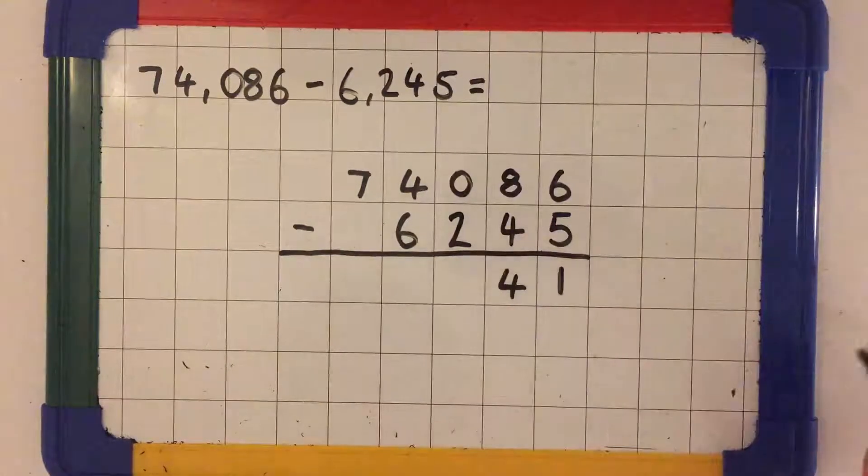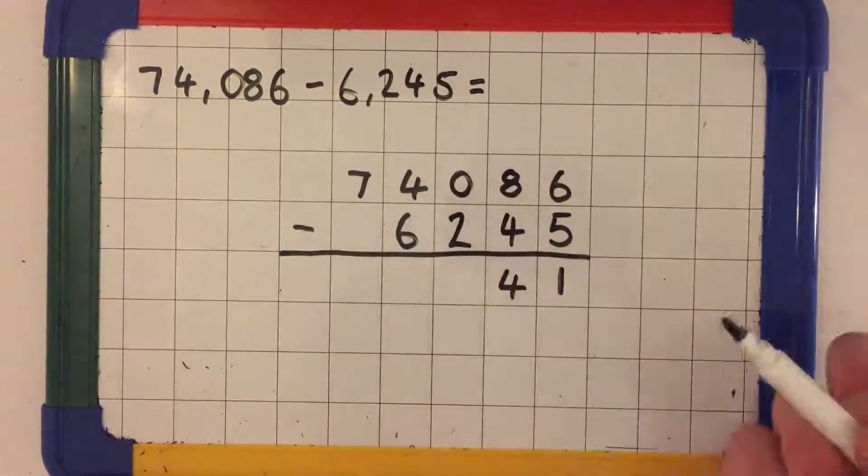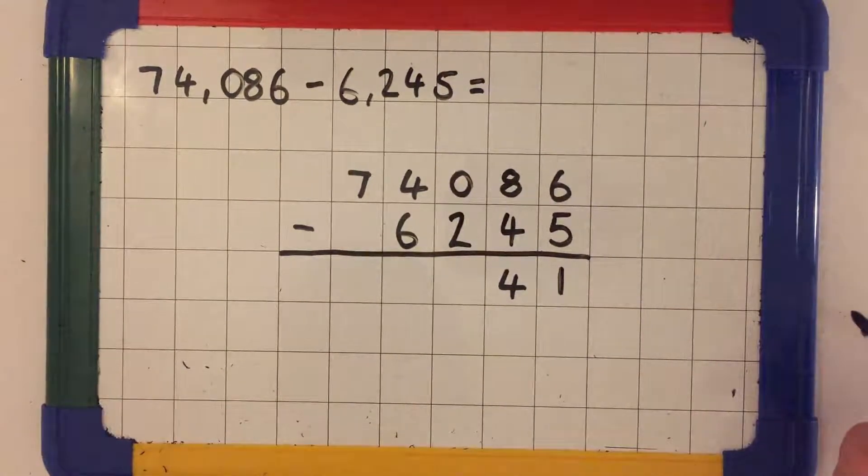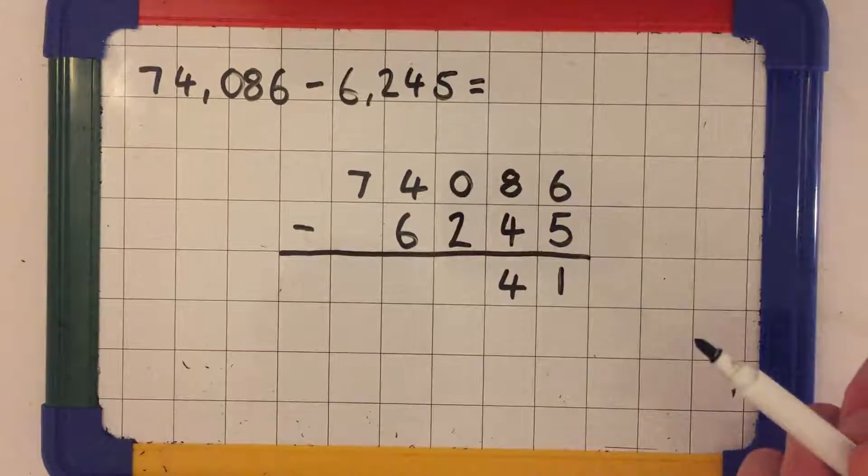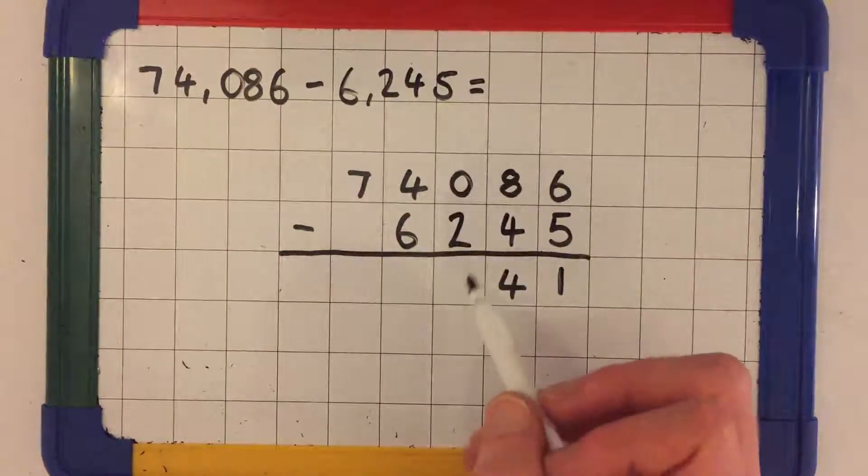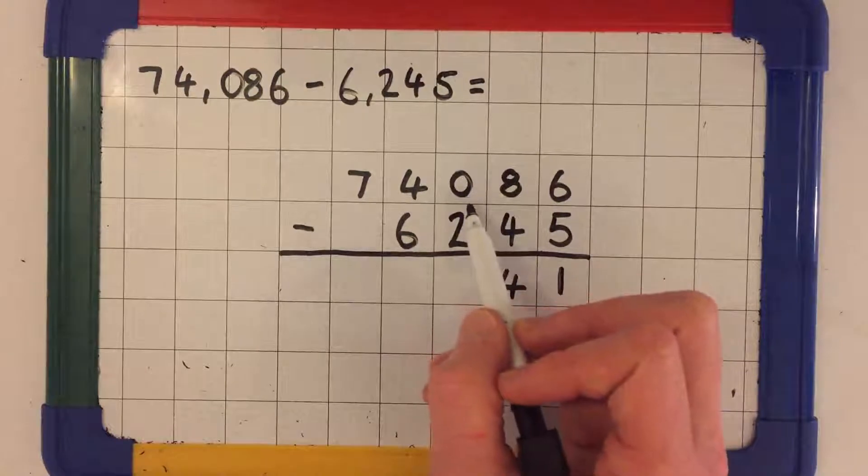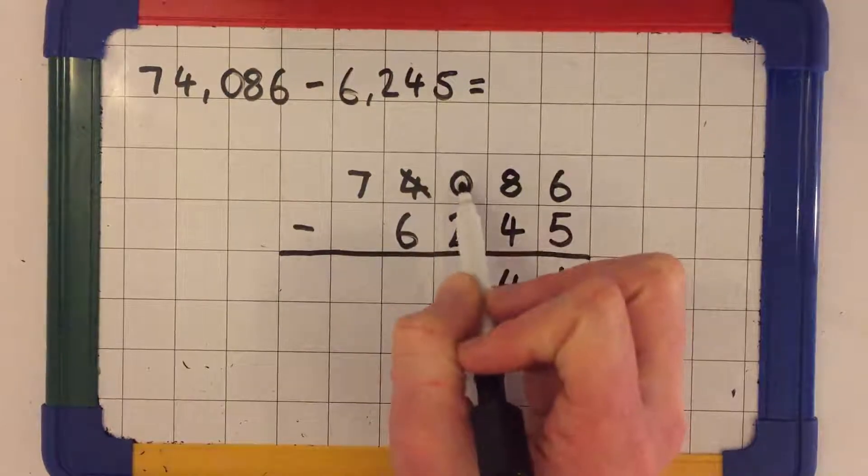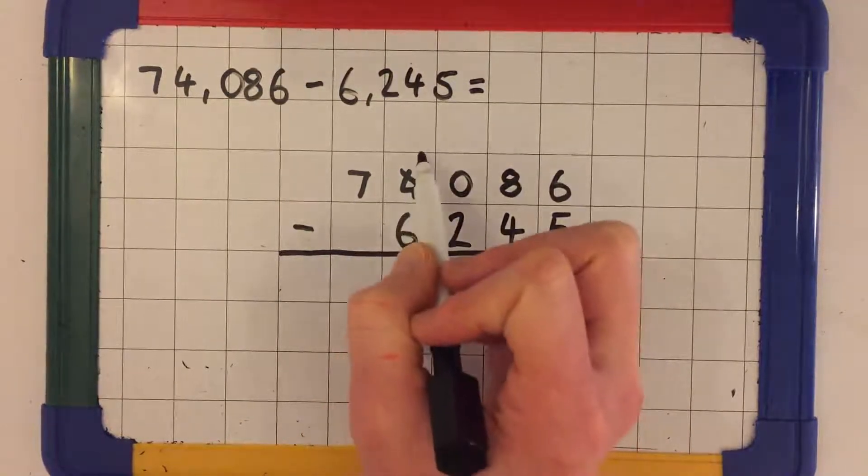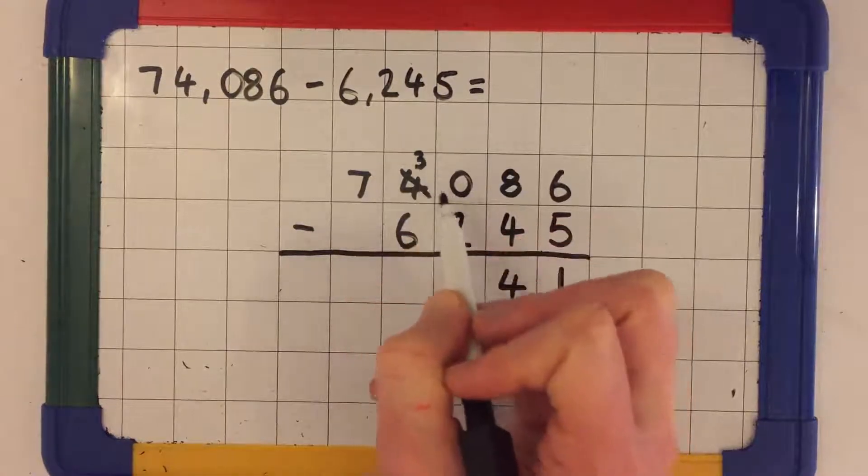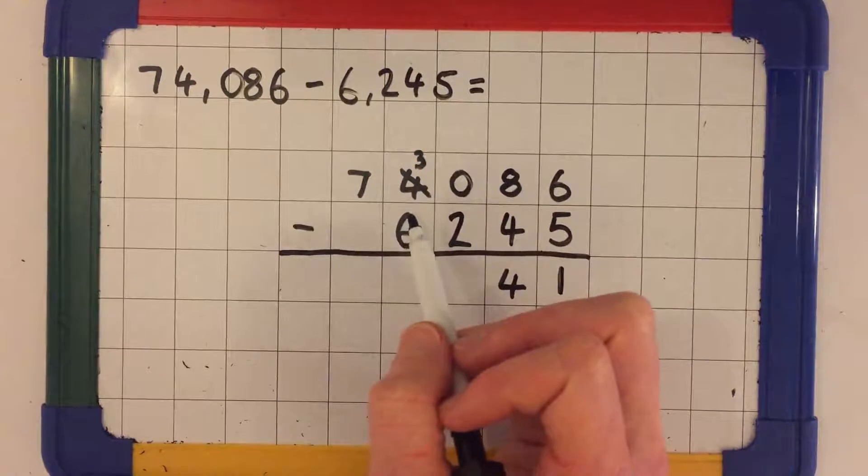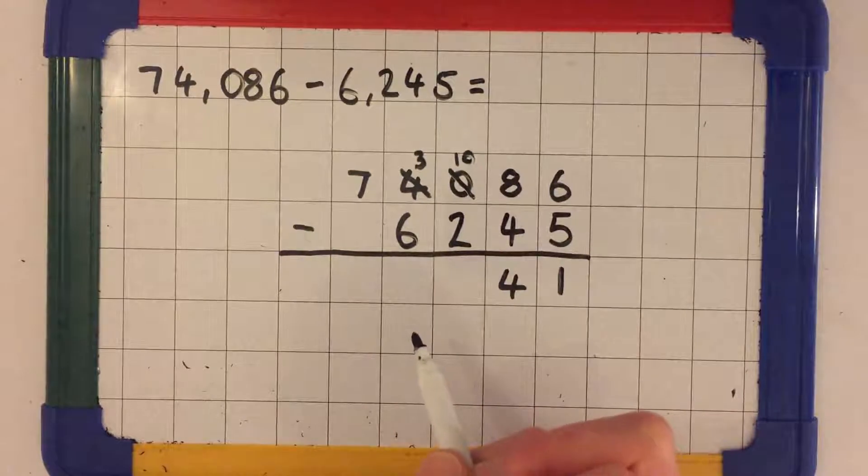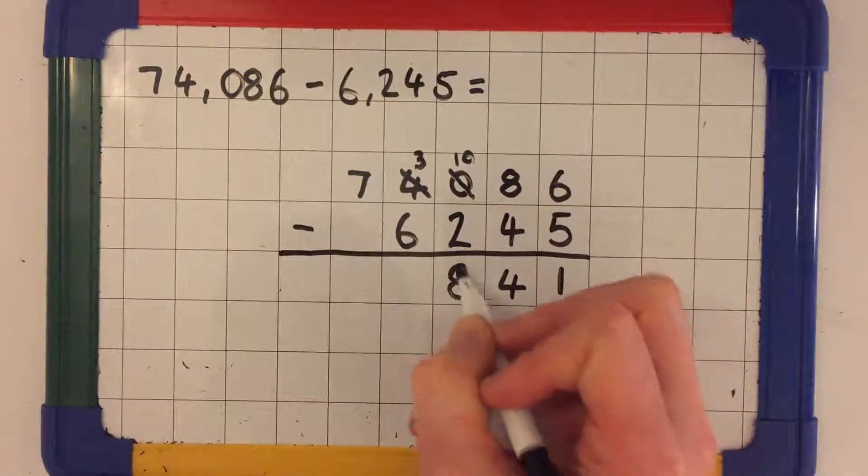0 subtract 2. I can't do that. If I've got no hundreds, I can't take two hundreds away from no hundreds. This we often call a red alert and means I need to find some extra hundreds somewhere. I can find these extra hundreds by exchanging 1,000 for 10 hundreds. So I exchange one of the 4,000, that means we end up with 3,000 for 10 hundreds. And I add these 10 hundreds to my zero to make 10. Now I can do 10 subtract 2. That makes 8 hundreds.